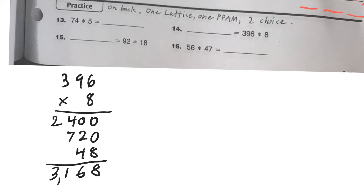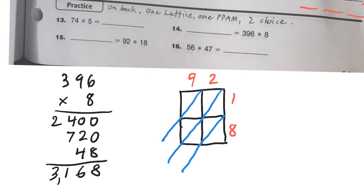And for 15, I'll do that one with the lattice method. And my grid will look like this. And let's see, one times two is 2. And eight times two is 16. And nine times one is nine. And nine times eight is 72.